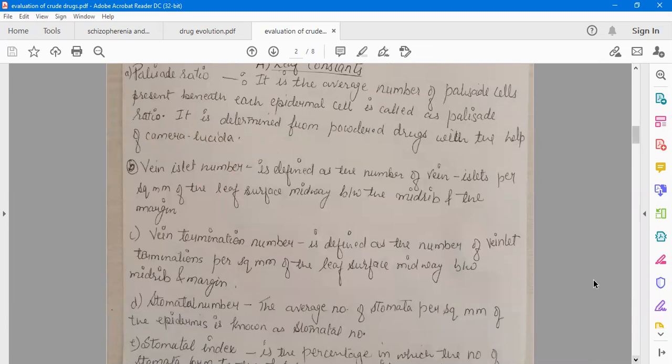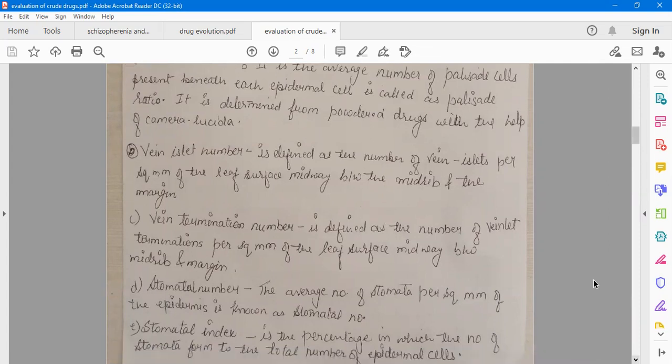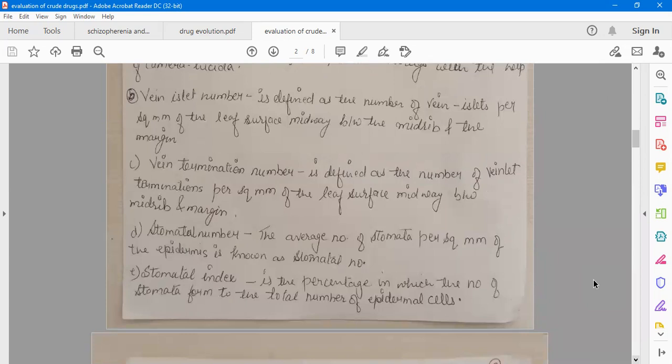The second one is vein isolate number, defined as the number of vein isolates per square millimeter of the leaf midway between the midrib and the margin. The vein termination number is defined as the number of vein isolate terminations per square millimeter of the leaf surface midway between midrib and the margin.